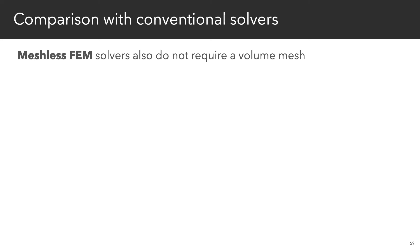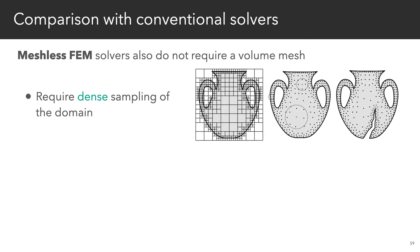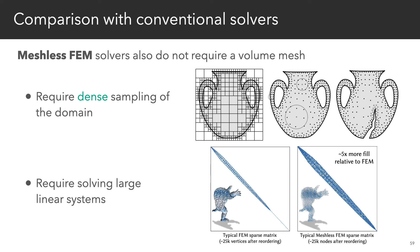Meshless FEM methods such as moving least squares don't require any meshing either. However, unlike Monte Carlo, these methods still require a dense and careful sampling of the entire domain. They also need to solve large global systems of equations that are typically a lot bigger compared to FEM.